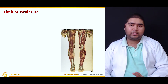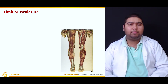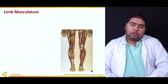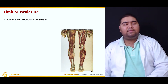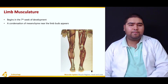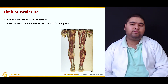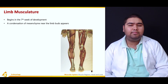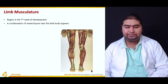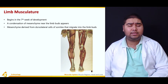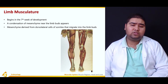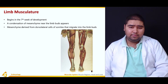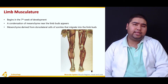Now we move on to the limb musculature. Limb musculature development begins in the seventh week of development. There is a condensation of mesenchyme near the limb buds, and this condensation of mesenchyme is derived from the dorsolateral cells of the somite that migrate into the limb buds.